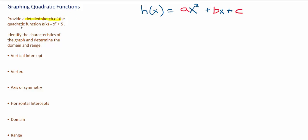In this problem, we'll be drawing a sketch of the graph of a quadratic function, h of x equals x squared plus 5. We'll be identifying the characteristics of the graph, including the vertical intercept, the vertex, the axis of symmetry, and the horizontal intercepts. We'll also be finding the domain and the range of the function.